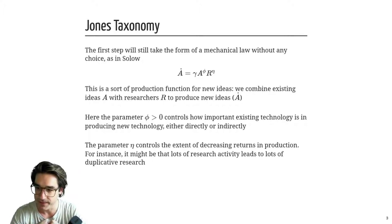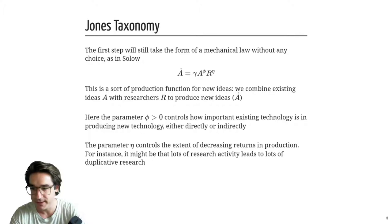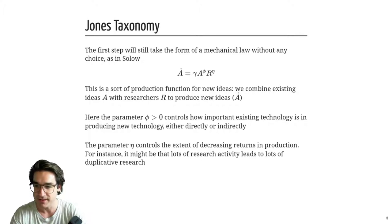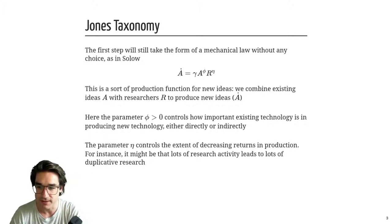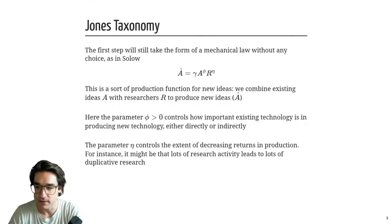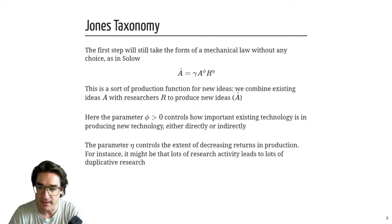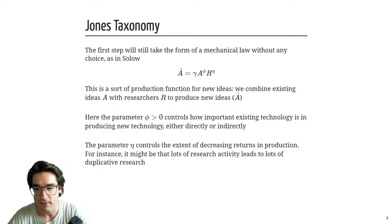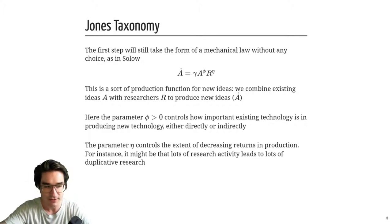The rationale is: imagine you had one team working on something and you double your scale to two teams. If they don't perfectly communicate, they might do duplicative work — try the same thing. That duplication means their total output is going to be less than double the original. That's 'stepping on each other's toes.' As you get a bigger and bigger society, informational constraints get larger, so there's certainly going to be some concavity.